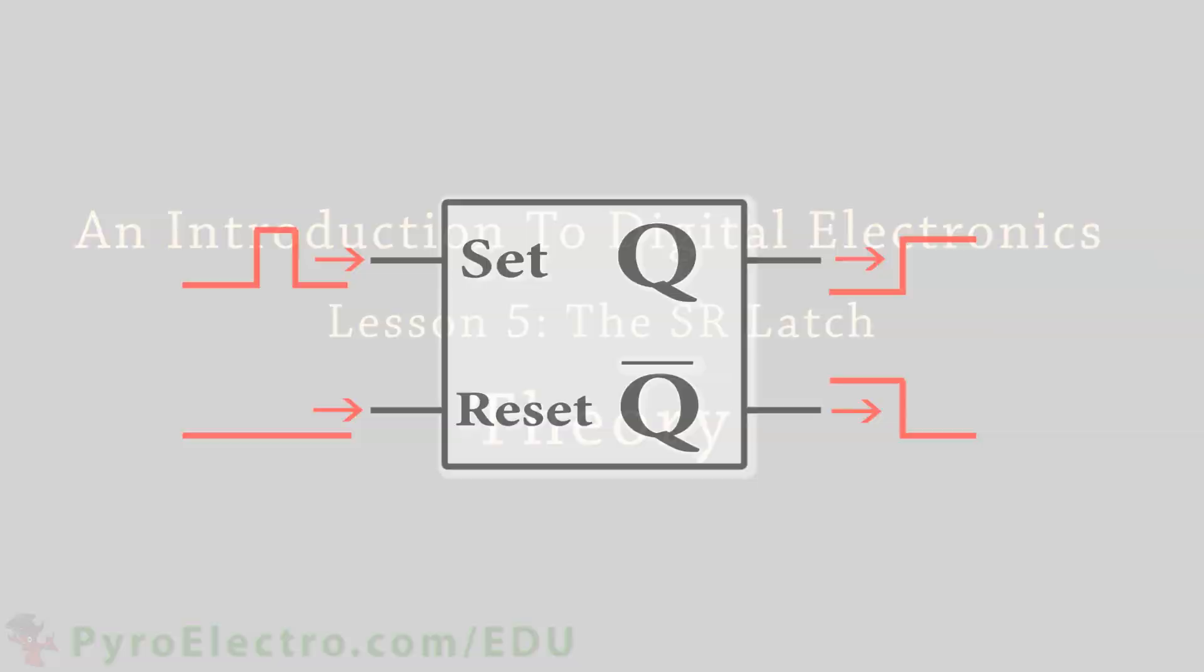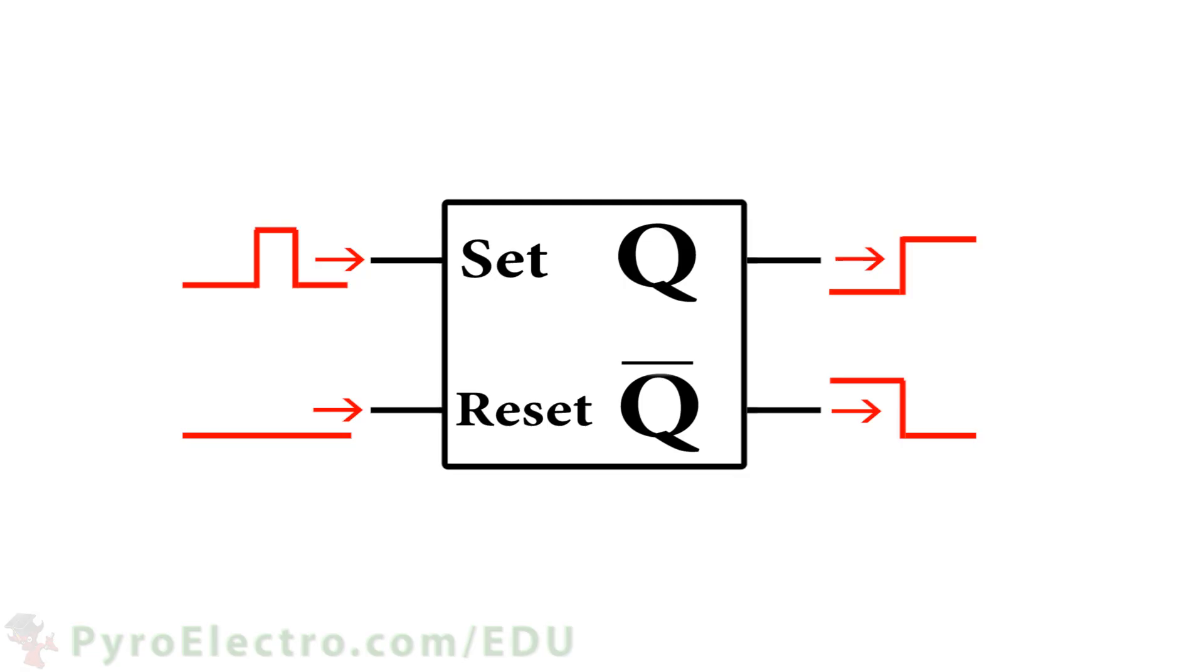Now, we're going to take a look at a logic element called a LATCH. LATCHs get their name because after receiving a single logic 1 signal, they set their output to logic 1, and stay there until reset.